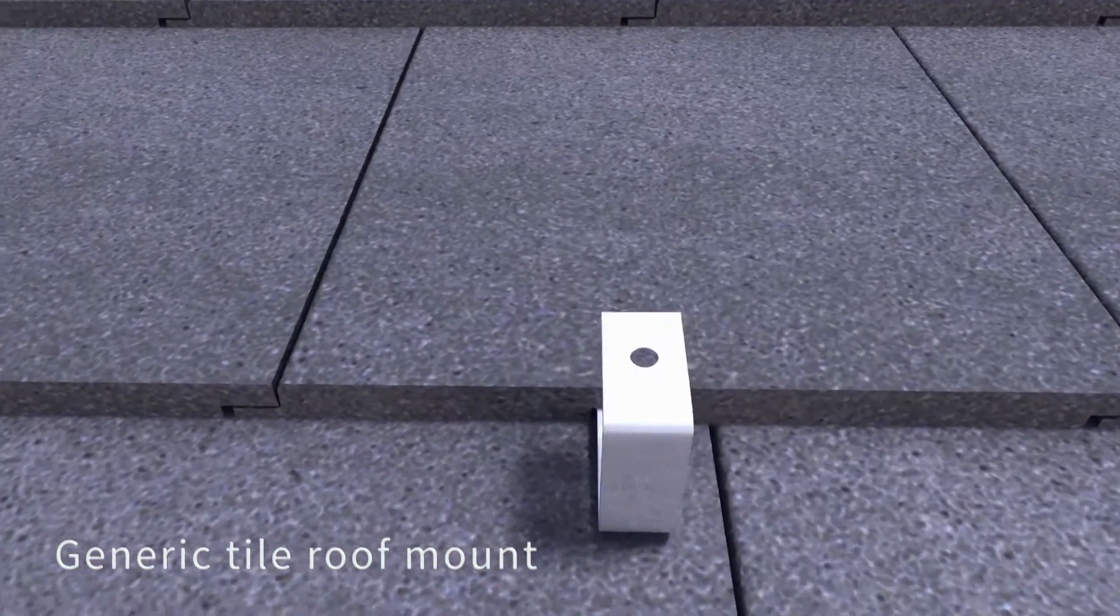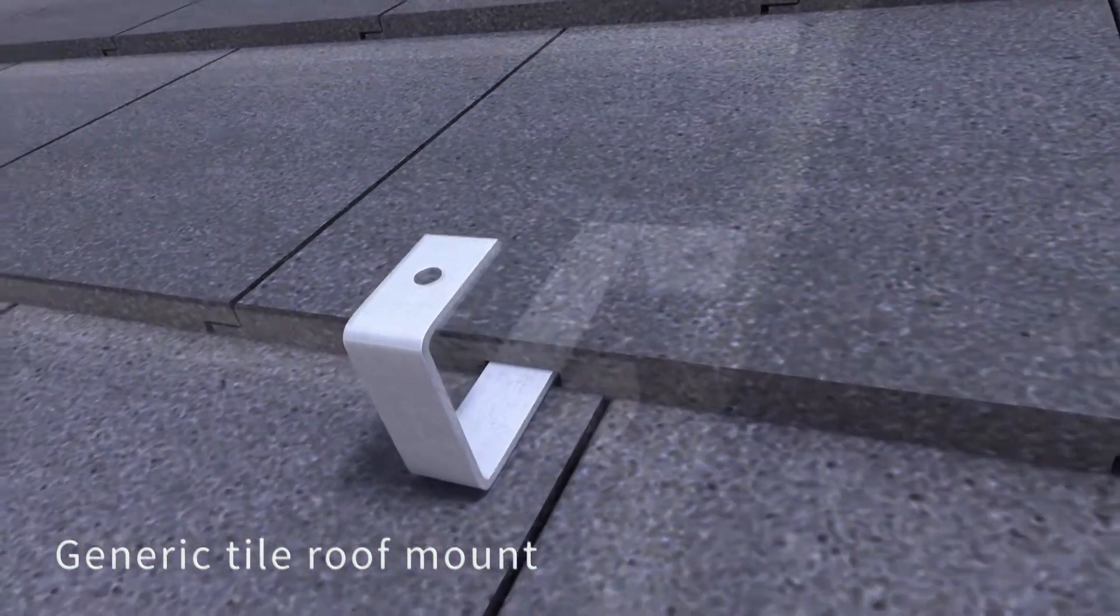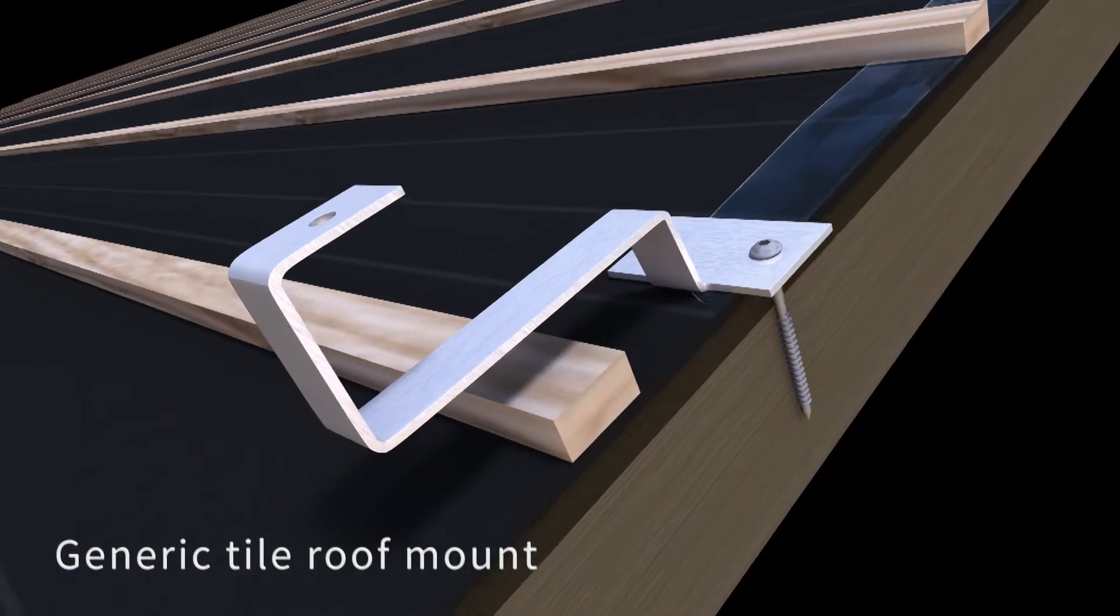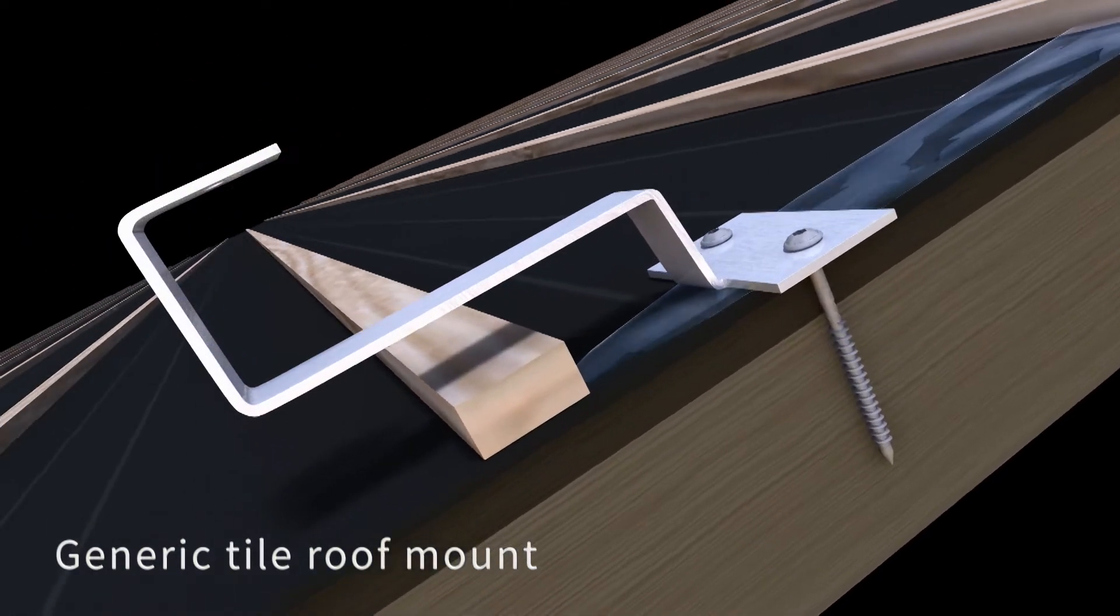The purpose of any metal flashing is to protect your roof against water penetration. However, the technology and methods used to flash tile roof mounts vary considerably.